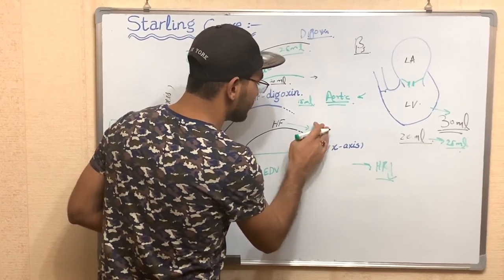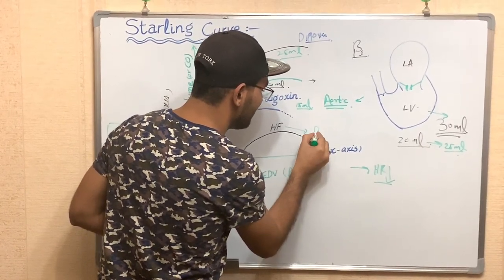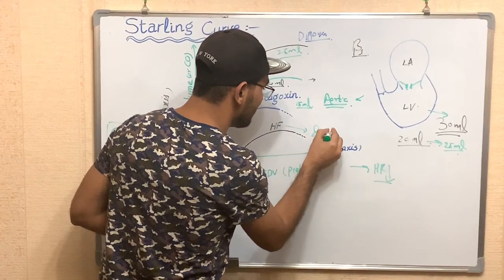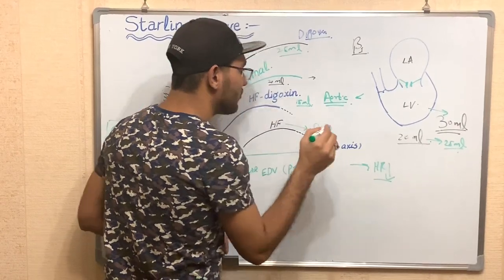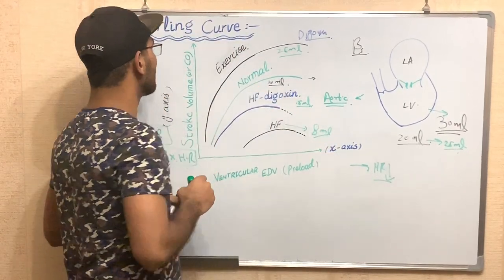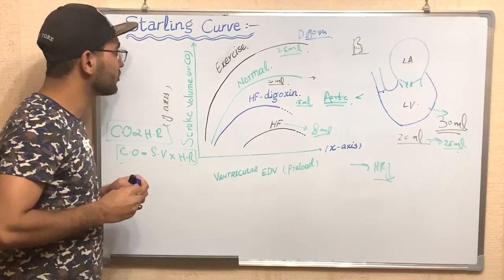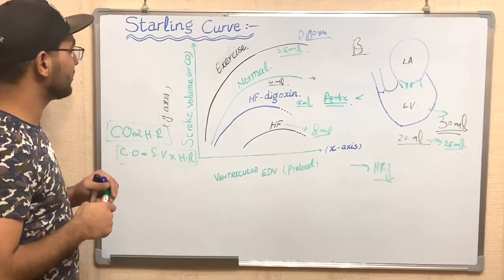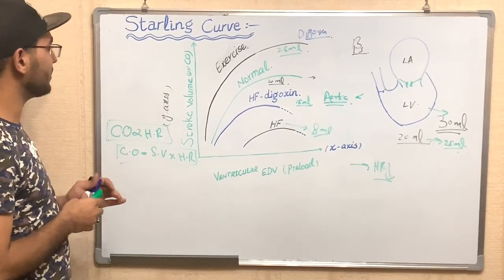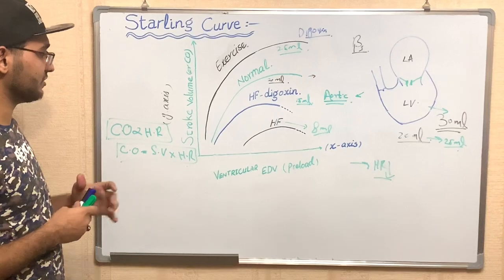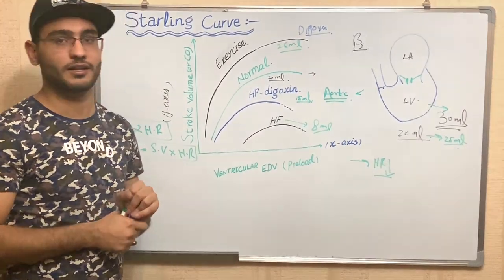In severe heart failure, nearly 8 to 10 milliliters of blood moves out from the ventricle into the vessel. So this was the Starling curve — a graphical representation of the relationship between stroke volume and end-diastolic volume.